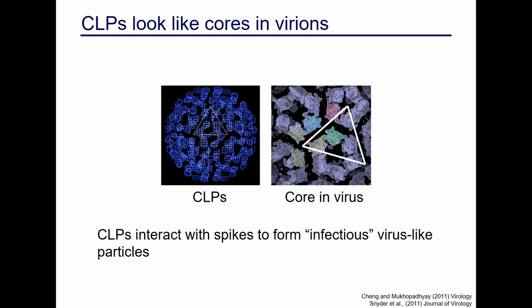Structurally we have something that looks like a core — but does it actually function like a core? The answer is yes. Work from Richard Kuhn, Bill Galvert, and our lab has shown that you can take CLPs, put them into cells expressing glycoproteins, and the particles that come out incorporate the in vitro CLP and are infectious — able to release genomic material in a new cell. So structurally and functionally, our CLP system seems to mimic very well what is found inside a cell during natural infection.